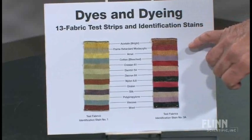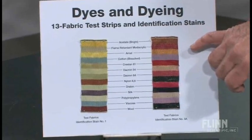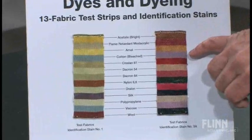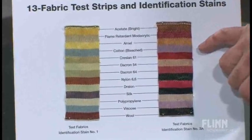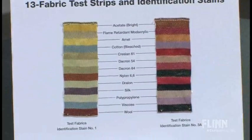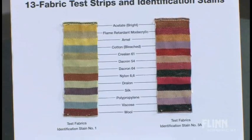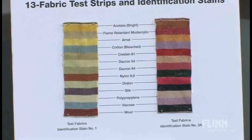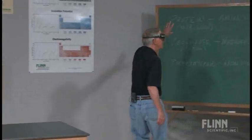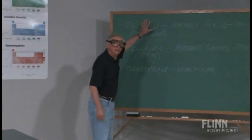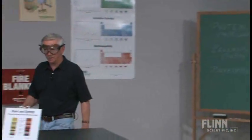Acetate, flame retardant, mod acrylic, R&L. Here's cotton that's bleached. Here's silk down here. Something in that dye mixture really goes for the silk. The ionic spaces on it hold dye really well.